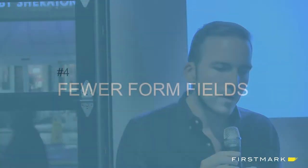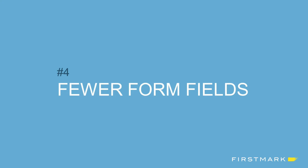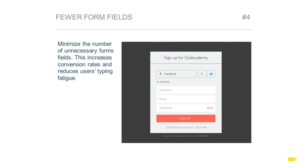Principle four was really getting rid of as many form fields as we could. This is not a groundbreaking principle, but all of us have been tired of just typing and typing through forms and different websites. It was really critical for us to minimize the number of form fields, as this increases conversion rates and considerably reduces user typing fatigue.